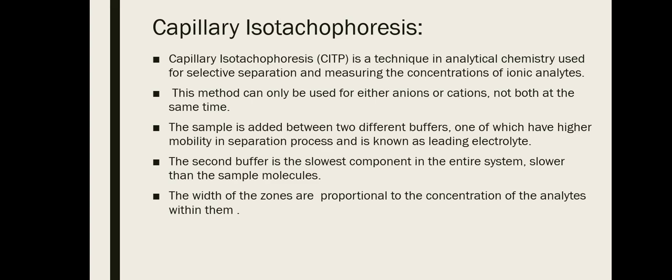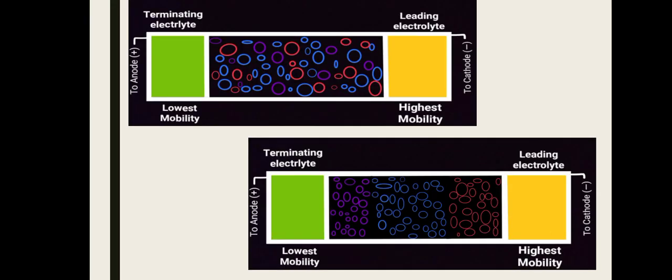The width of the zone is proportional to the concentration of the analyte within them. In the example, two types of buffers are applied in a capillary — one with highest mobility termed the leading electrolyte, and one with lowest mobility termed the terminating electrolyte. When an electric field is applied, the particles shown in red, blue, and purple separate and form their own bands according to their mobility. By measuring the width of each band, we can determine the concentration of each analyte.